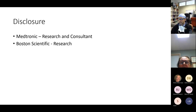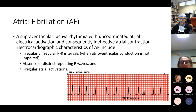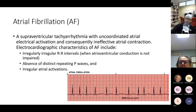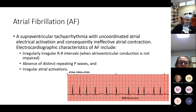Atrial fibrillation is a supraventricular tachycardia with uncoordinated atrial electrical activation and consequently ineffective atrial contraction. The EKG characteristic findings of atrial fibrillation are irregular-irregular R waves, as you can see in this EKG here, and there is an absence of any distinct repeating P waves.